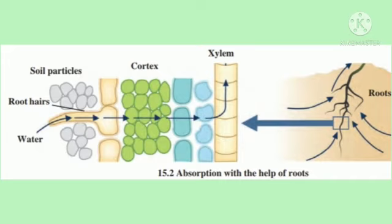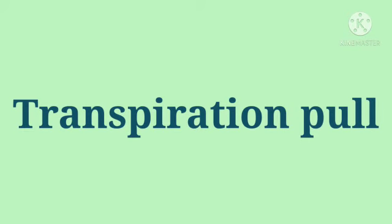Root cells are in contact with water and minerals in the soil. Water and minerals enter the cells on the root surface due to the difference in concentration. As a result, these cells become turgid. These turgid cells exert pressure on the adjacent cells. This is called root pressure. Under the effect of this pressure, water and minerals reach the xylem of the roots, reducing the difference in concentration, and are continuously pushed forward. As a result of this continuous movement, a water column is formed which is continuously pushed ahead. This pressure is sufficient to lift water up in shrubs, small plants, and small trees.